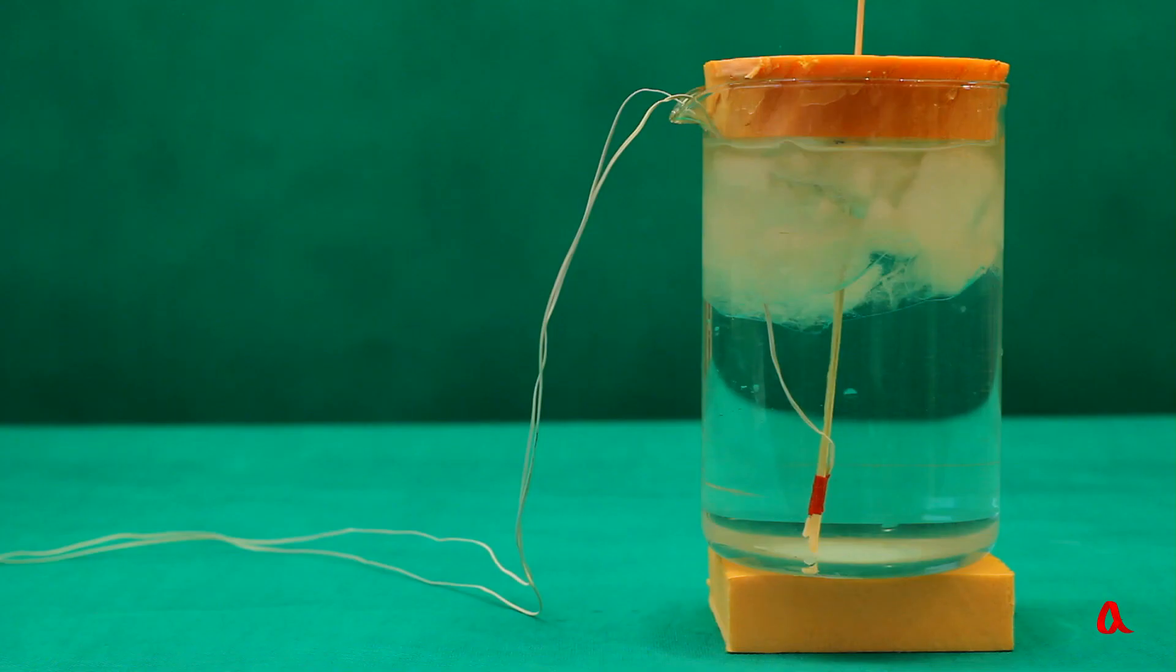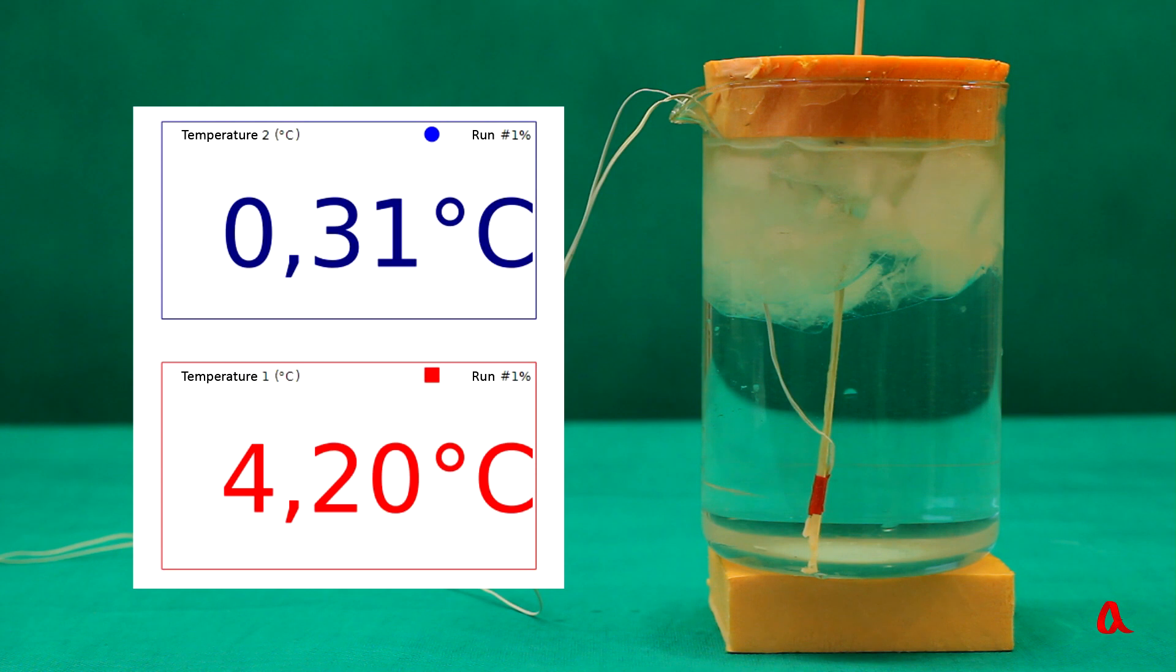The majority of liquids expand when heated. As for water, it behaves untypically in this case too. Let's put some ice into the water and measure the temperature of its upper and lower layers. If we wait a little, we'll see that the upper layer's temperature is around zero and the lower one's is around 4 degrees Celsius. The densest water got down to the bottom, so we can conclude that at 4 degrees water has the greatest density.